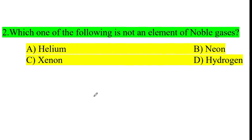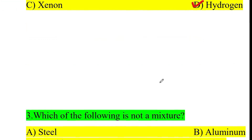Second question: which one of the following is not an element of noble gas? The noble gases are helium, neon, xenon, and hydrogen. Hydrogen is not a noble gas. So the answer is option D.